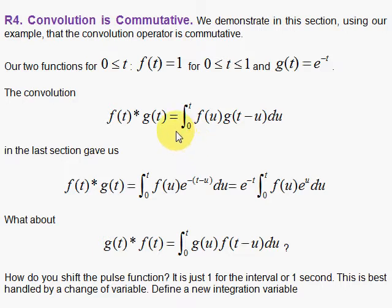So we're going to see if this commutes. We have f of t equals 1 for t going from 0 to 1, and g of t equals e to the minus t.